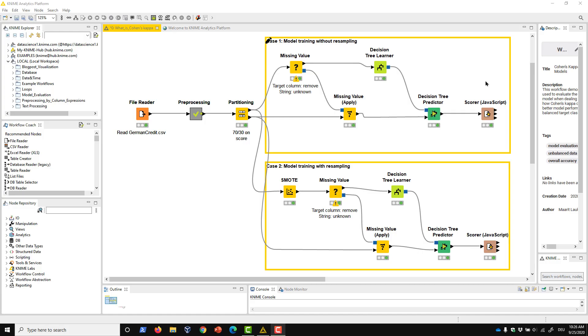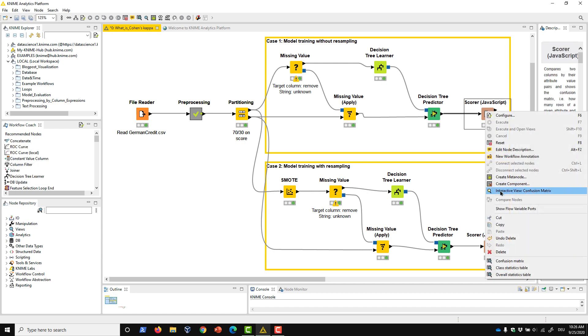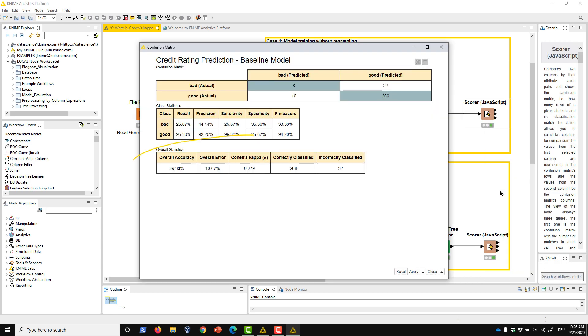Let's take a look at an example workflow that predicts the credit worthiness of credit customers with the decision tree algorithm. The scorer node reports the performance of the classification model in its interactive view. In this overall accuracy statistics table, we find the overall accuracy, overall error, Cohen's kappa, and other metrics.